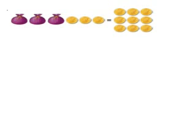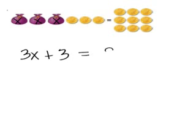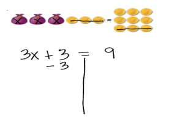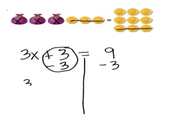Now, it's not always convenient to draw a picture every time I need to solve an equation. So let's see if we can translate this into numbers and symbols. If I call my unknown X, then I have three X plus three coins equals nine coins. I'm going to draw a balance line so that I remember what I do to one side, I have to do to the other side to keep it balanced. Before in the picture, I got rid of these three coins and then three coins on the other side — getting rid of in math is subtraction. So I'm going to subtract three from each side. Plus three minus three is zero, and I'm left with three bags, and nine minus three is six.